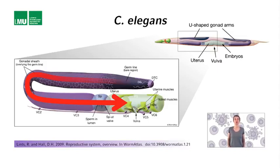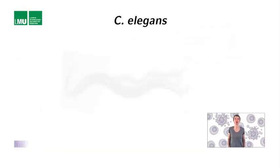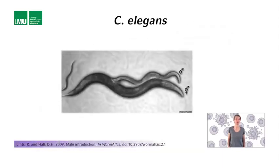However, for genetic analyses it is also important to be able to cross different strains and different mutants, and that's why it is good to have males as well. If males mate with hermaphrodites and fertilize them, cross-progeny is generated, because male sperm outcompetes hermaphrodite sperm.